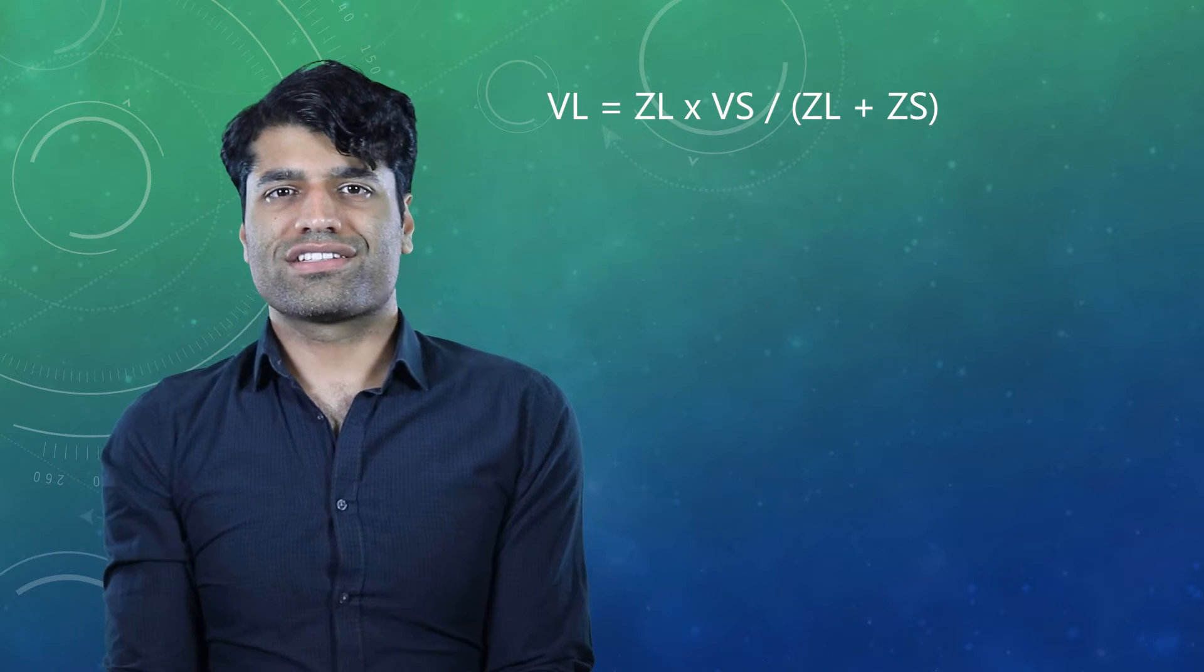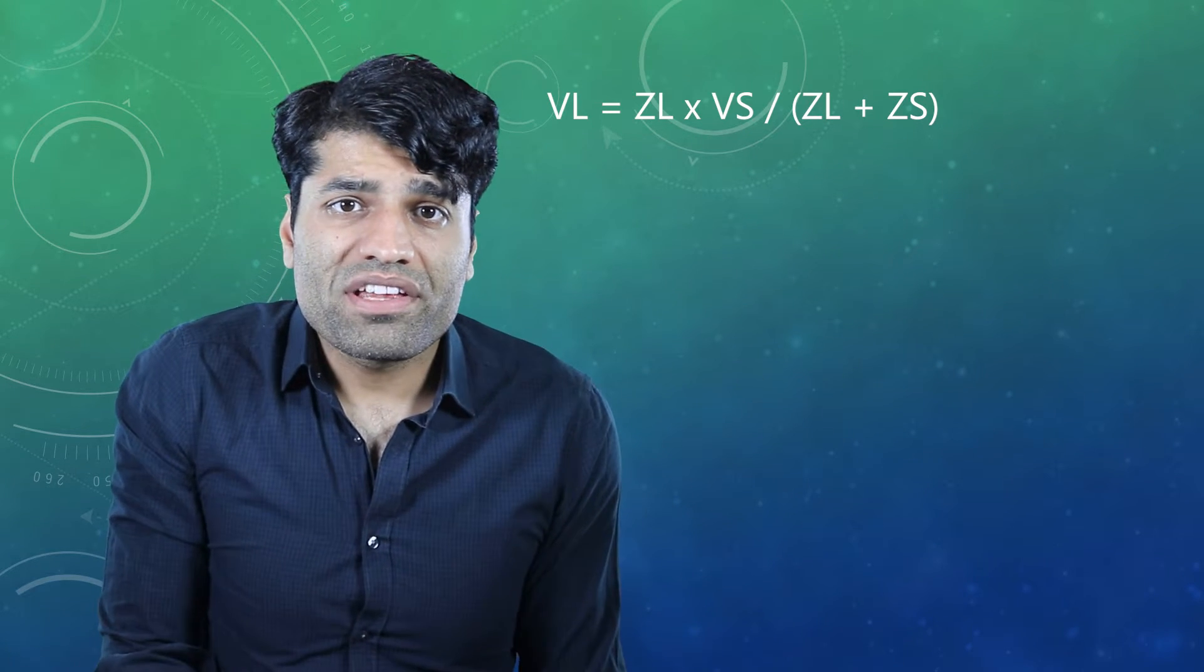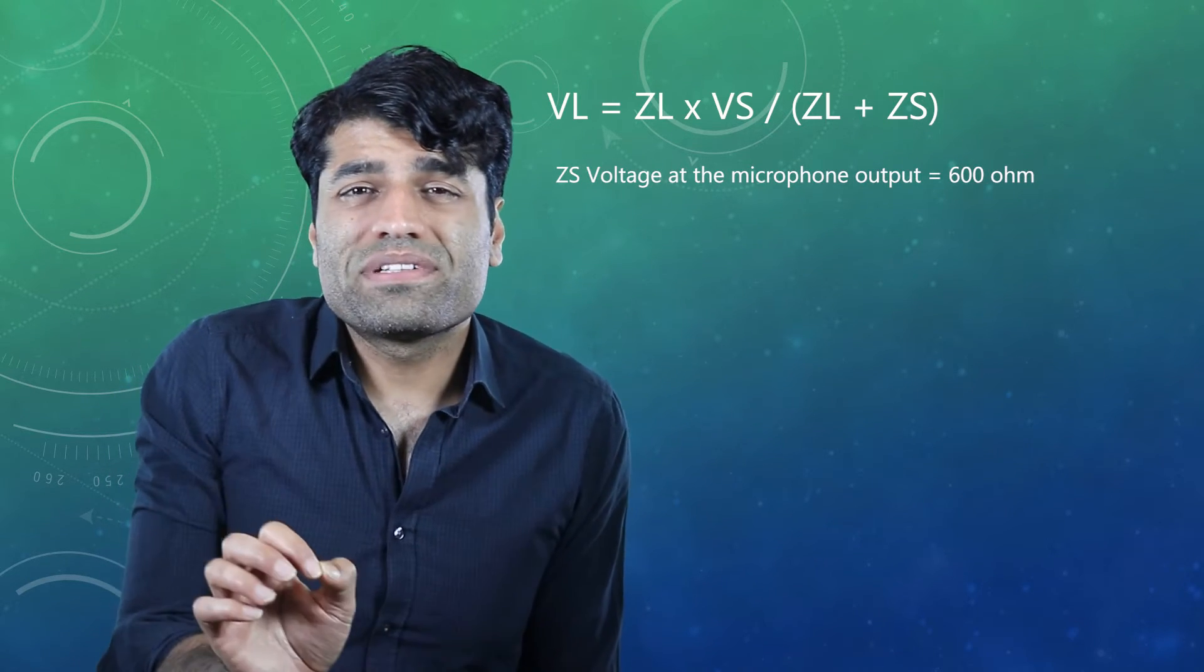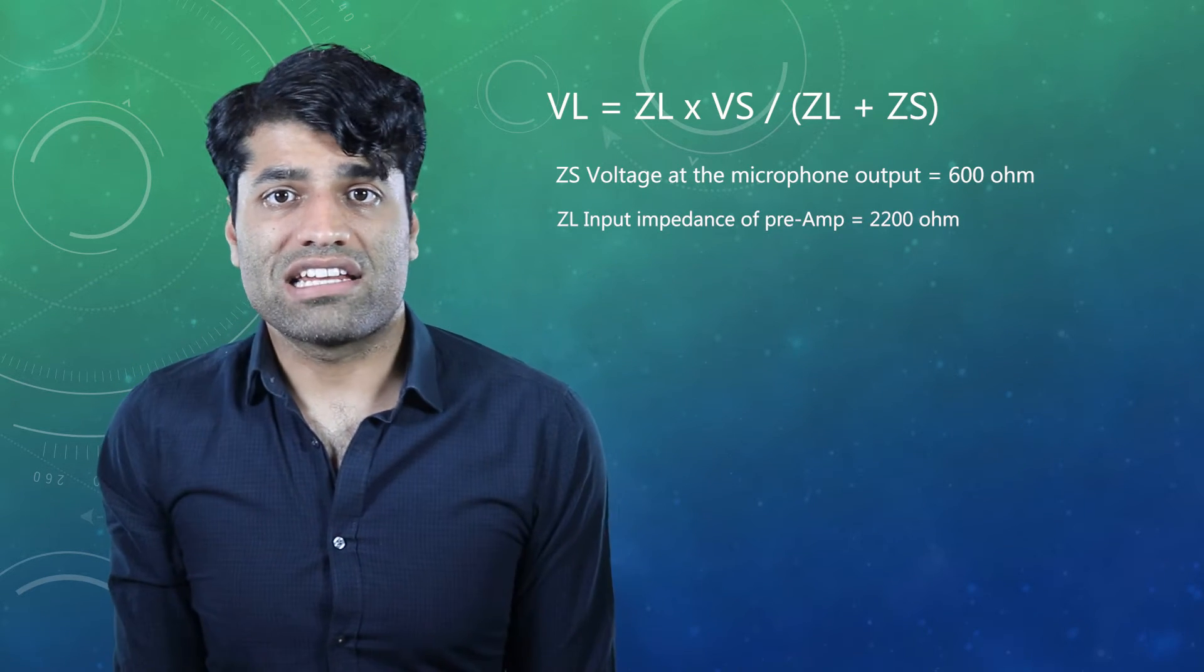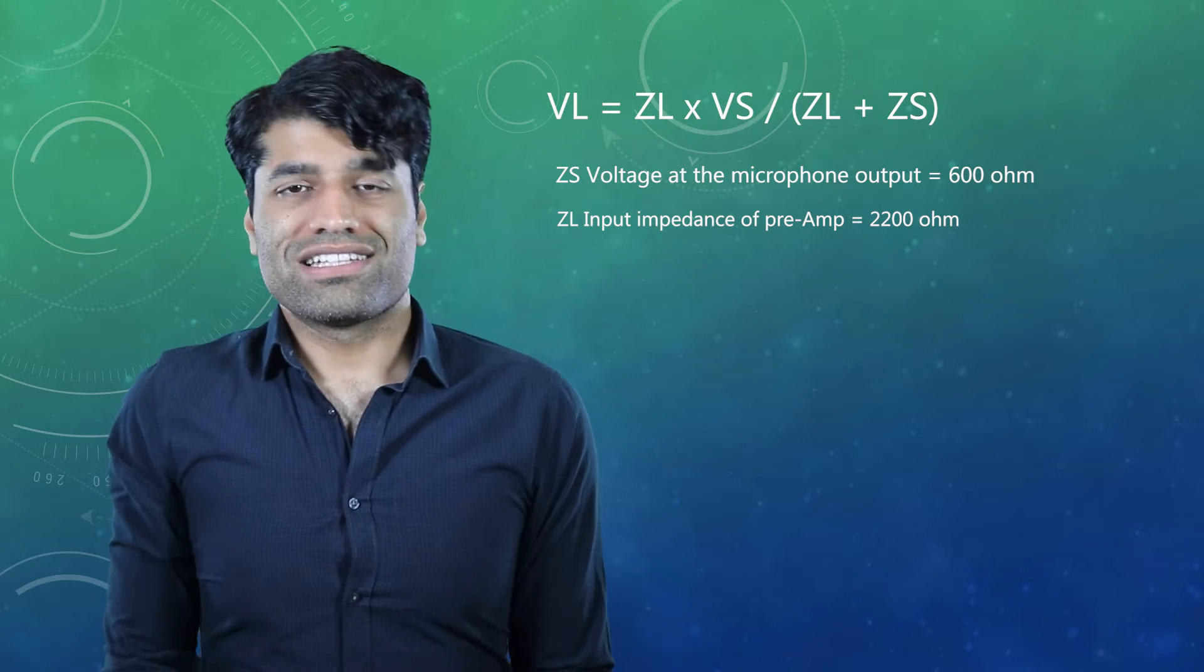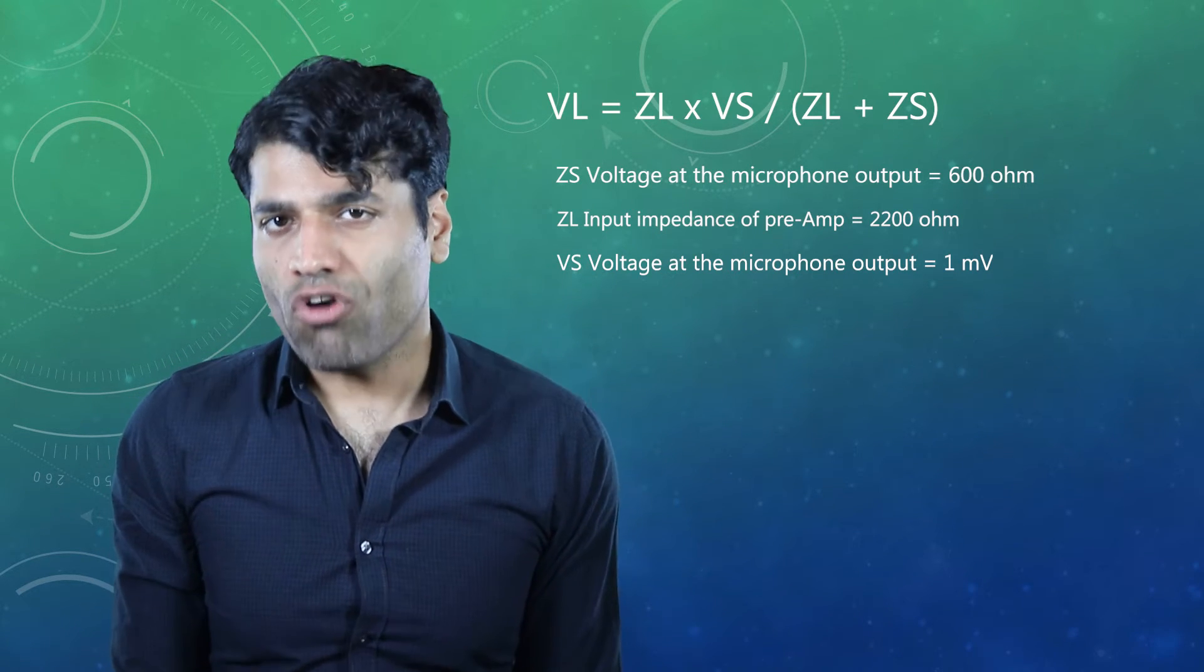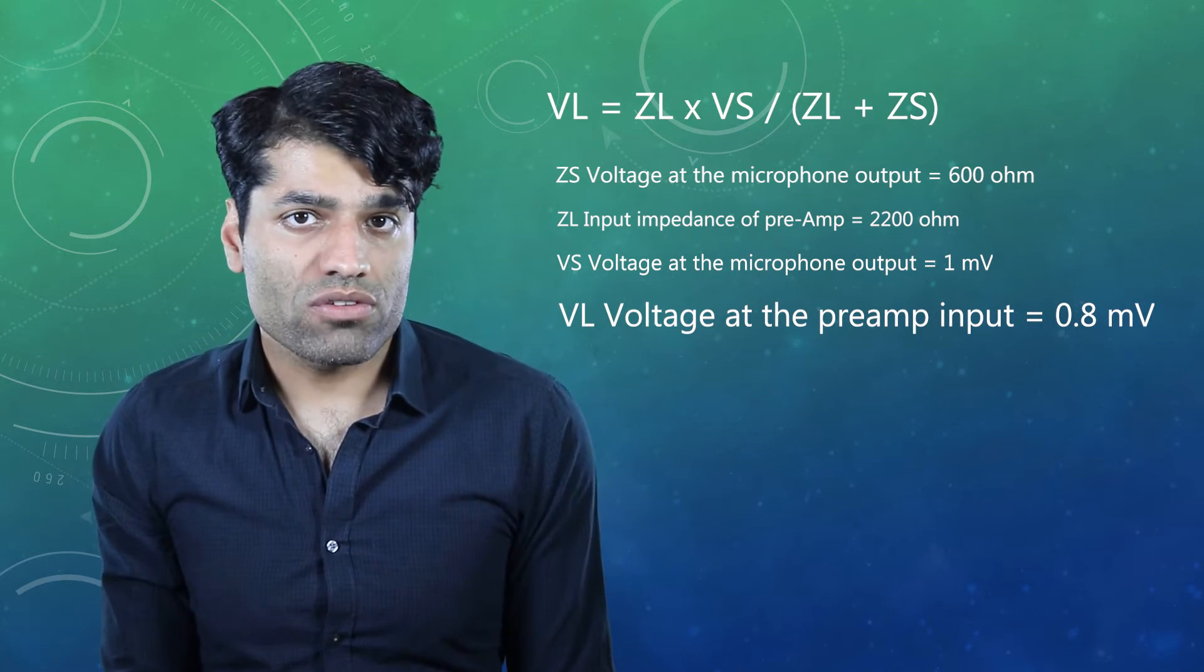To better understand output impedance, let's enter some actual values into the impedance voltage equation. Comica track shot shotgun microphone has got an output impedance of 600 ohms. Canon cameras have got an input impedance of 2200 ohms for a condenser mic. Now, let's apply a very low microphone output voltage of just 1 millivolts. This gives us a preamp input of just 0.8 millivolts.